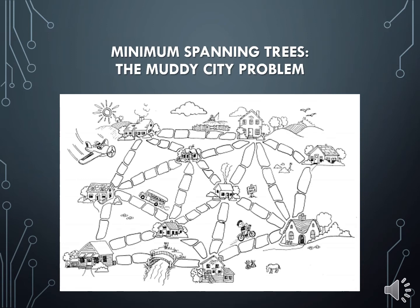The mayor informed the citizens that two conditions needed to be met. Number one, a sufficient amount of streets needed to be paved in order to allow the citizens to travel from their houses to any of their neighbors' houses solely through the use of paved roads. Number two, the city would spend the least amount of money possible in buying the pavement stones used to pave the roads. Go ahead and try to find the optimal route that connects each of the 10 houses in the city using the fewest amount of pavement stones.